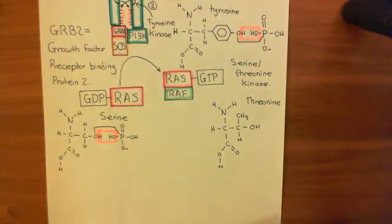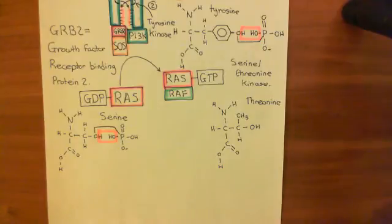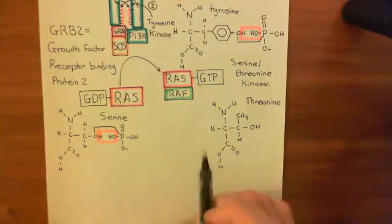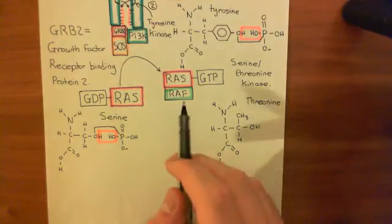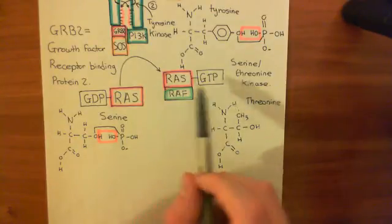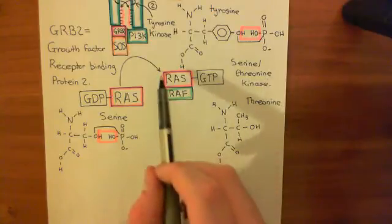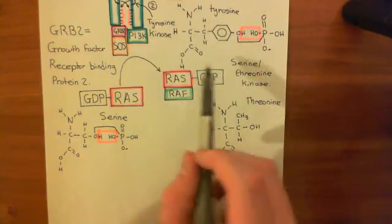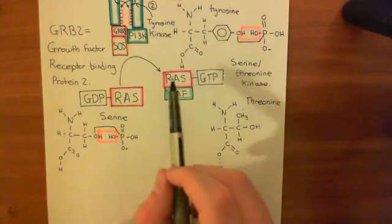Welcome to this next video in which we are discussing HER2 amplification and breast carcinoma. So, RAF protein — we got to the stage where RAF protein had been activated by this ON-RAS protein, which was a monomeric G protein.